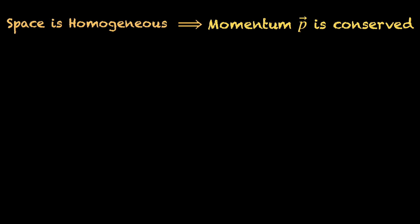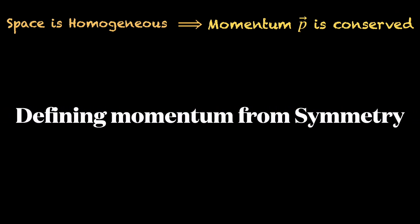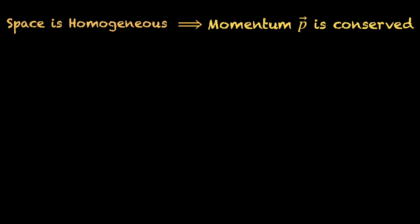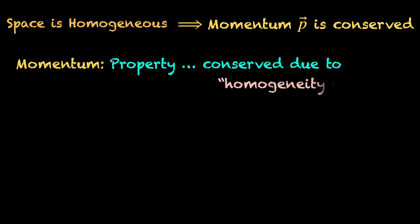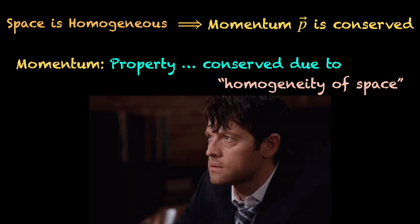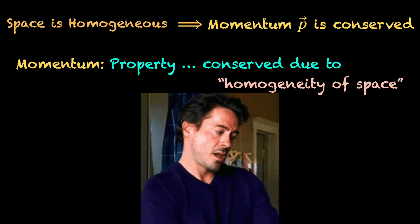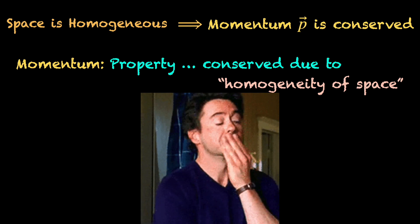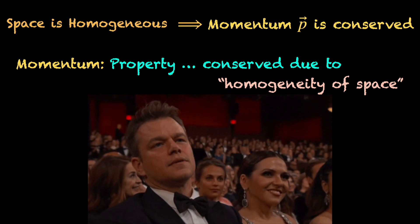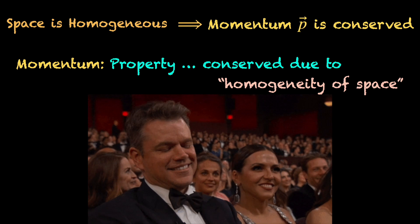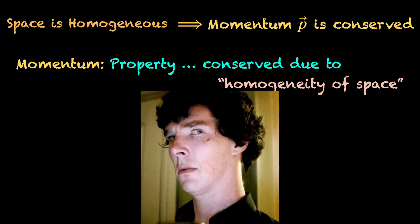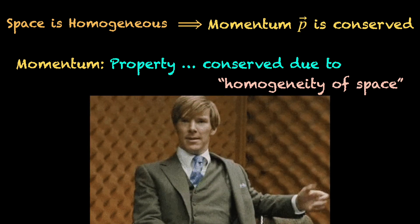This gives us a way to generalize the definition of momentum beyond the p equals mass times velocity of Newtonian mechanics. We can say, for a given system, its momentum is that property whose conservation is ensured by the homogeneity of space. What the hell, what good is this definition? At least, the simple p equals m times v was a mathematical equation we could use. This one sounds like word salad. Well, not really. We can get a mathematical definition out of this too.